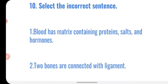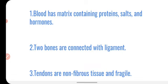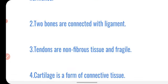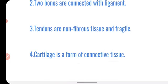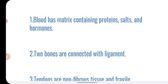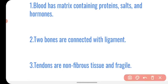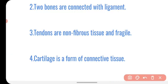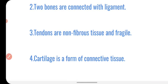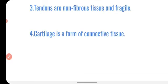Next: select the incorrect statement. Blood has matrix containing protein, salt, and hormone — this is correct, as blood plasma contains these. Two bones are connected with ligament — this is true. Option three states tendons are non-fibrous — this is incorrect because tendons contain fibers; they are fibrous tissue. So option three is the answer.